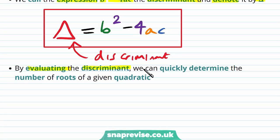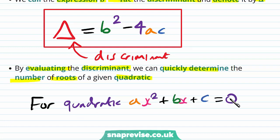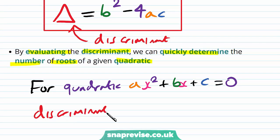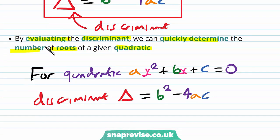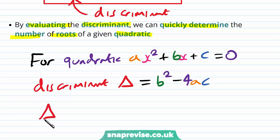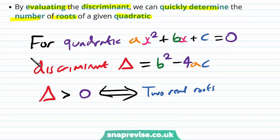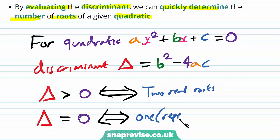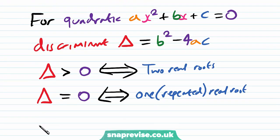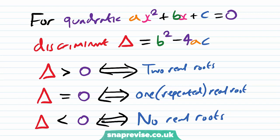By evaluating the discriminant, we can quickly determine the number of roots of a given quadratic. For a quadratic of the form ax squared plus bx plus c equals zero, and discriminant delta equals b squared minus 4ac: if delta is strictly positive, this corresponds to two real roots; if delta equals zero, this corresponds to one repeated real root — we call it repeated because the plus and minus cases are the same; and if delta is less than zero, this corresponds to no real roots, i.e. no solutions.